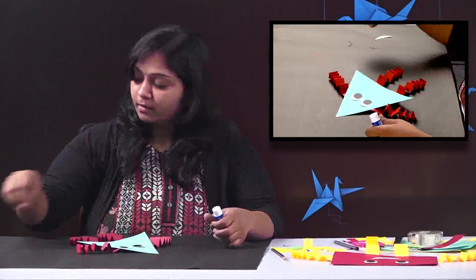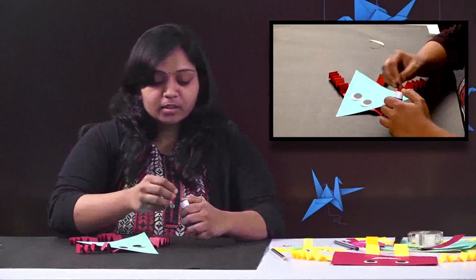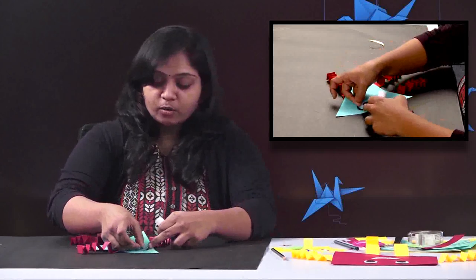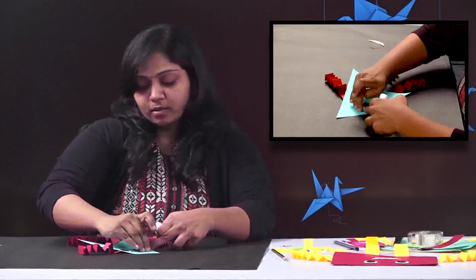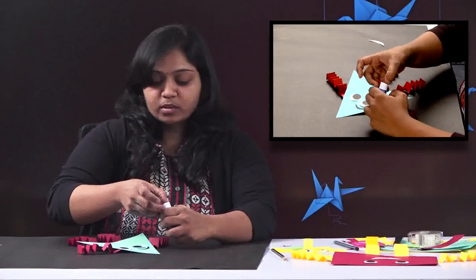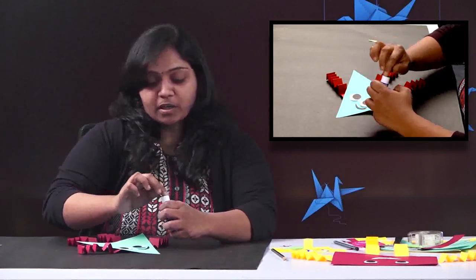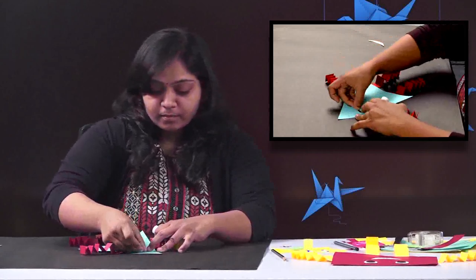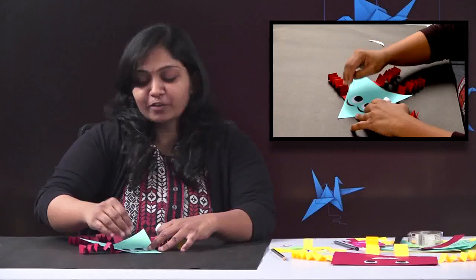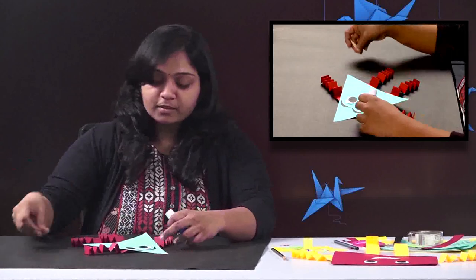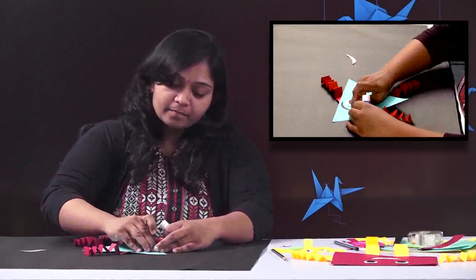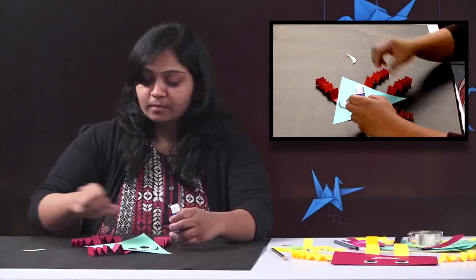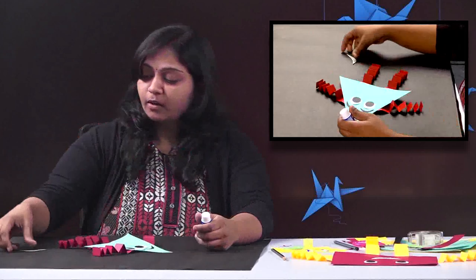Then comes the eyebrows. Just apply glue. You can even use Fevicol, but glue stick will help you a lot because it won't mess with the sticking part. Just go with glue sticks, the Fevicol is the second option. Eyebrows are also done and now I am doing the mouth.